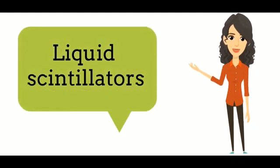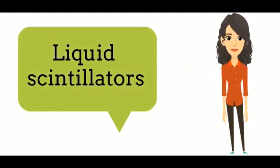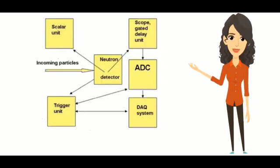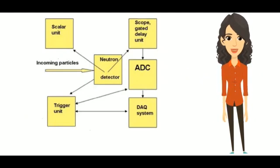Liquid scintillators can measure both neutrons and gamma rays. This is a typical neutron detection setup.